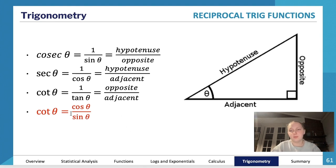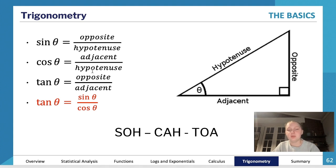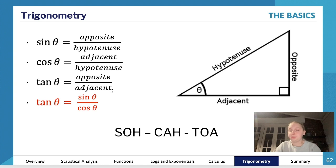Just in case you've forgotten, here are your basic trig identities: sin θ is opposite over hypotenuse (SOH), cos θ is adjacent over hypotenuse (CAH), and tan θ is opposite over adjacent (TOA) — giving you SOH CAH TOA. And again, tan θ is just equal to sin θ / cos θ.